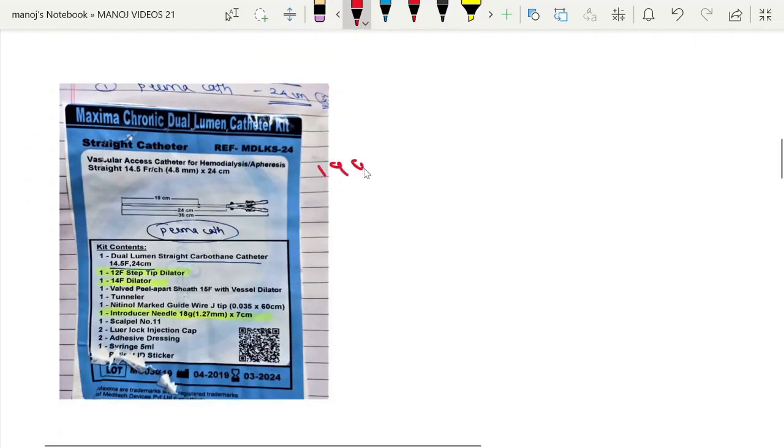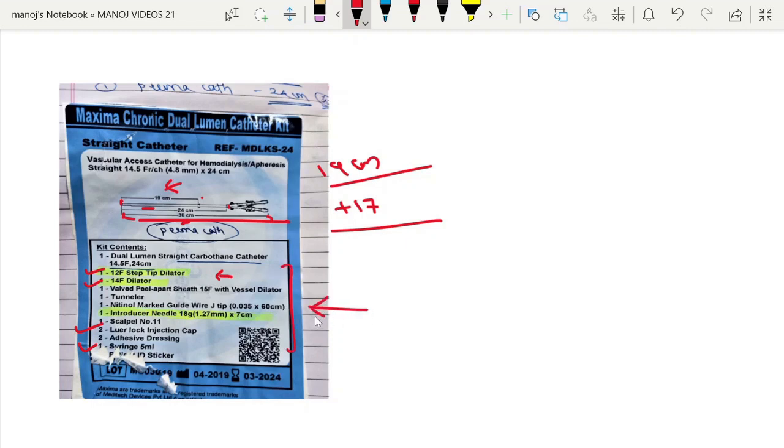Now it is 19 cm perm cath. So 19 cm plus 17 cm will be the total length. Here it is 19 cm, so 36 cm. And from here to here, 5 cm extra. So 24 cm, the total cath is 36 cm. And here you can see the dilator is 12 French and 14 French. The dilator is around 0.5 French lesser than the actual cath. And if you want to see other parameters, you can look at this label. This comes as a pre-packed kit, so all the contents of the kit are over here.